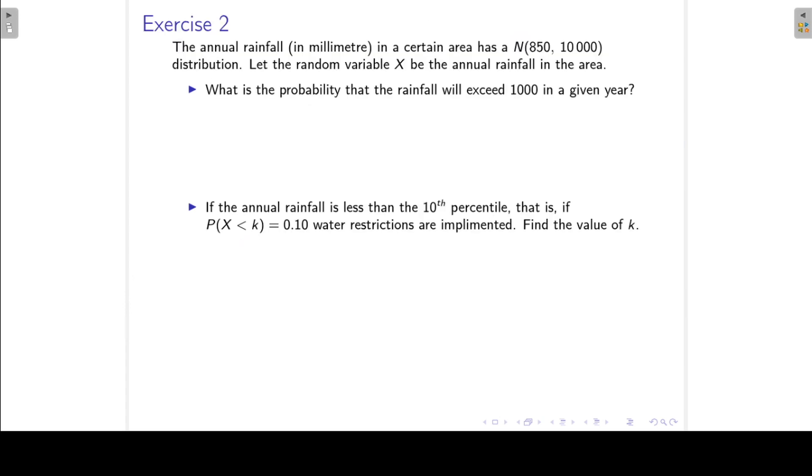Okay, let's have a look at exercise 2. The annual rainfall in a certain area has a normal distribution. If we let random variable X be the annual rainfall in this area, what is the probability that the rainfall will exceed 1,000 mm in a given year?